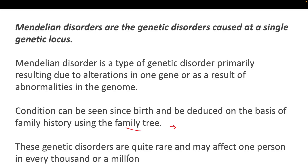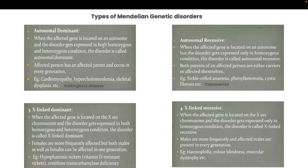There are four basic types of Mendelian disorders: autosomal dominant, autosomal recessive, X-linked dominant, and X-linked recessive. In our body there are two types of chromosomes — autosomes (22 pairs) and sex chromosomes (1 pair, either XX or XY). The 23rd pair is called the sex chromosome.